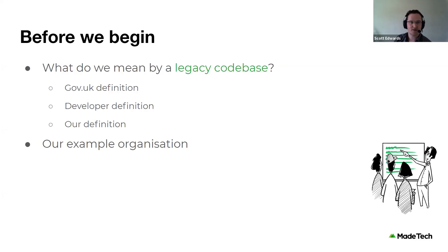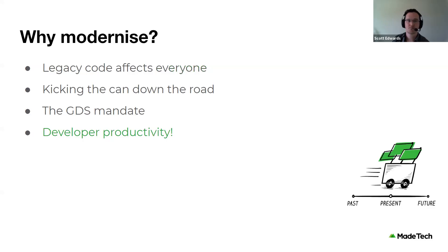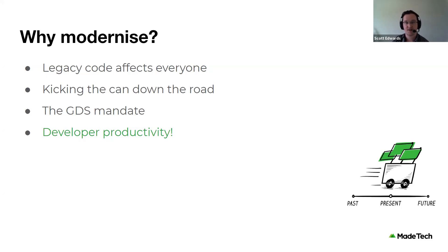Getting developers working safely and effectively on this codebase was considered a vital strategic outcome for our example organization. We believed that a modernization effort was a strong contender for enabling this outcome, but we had to convince stakeholders at all levels. This is an extremely important question: we need to figure out how modernization ties into developer productivity, and we need to remember that modernization comes with its own set of challenges.